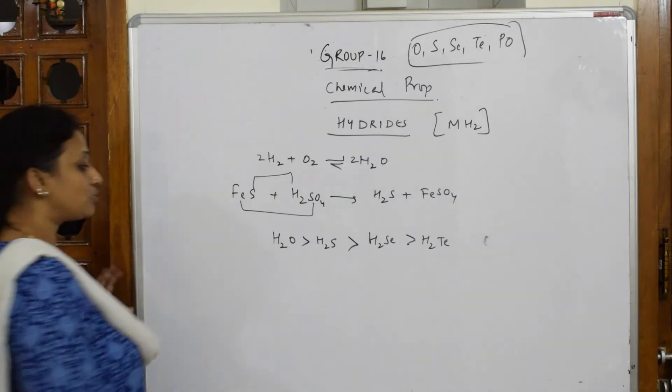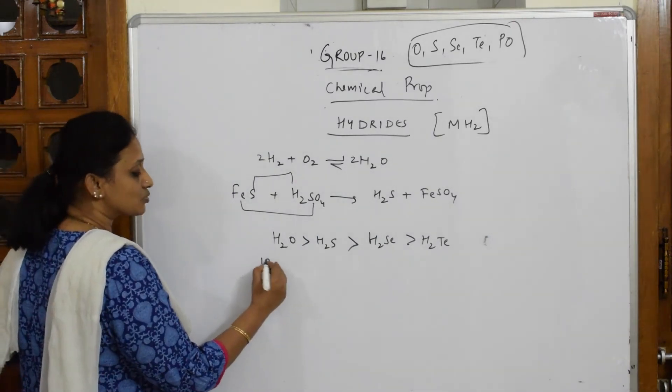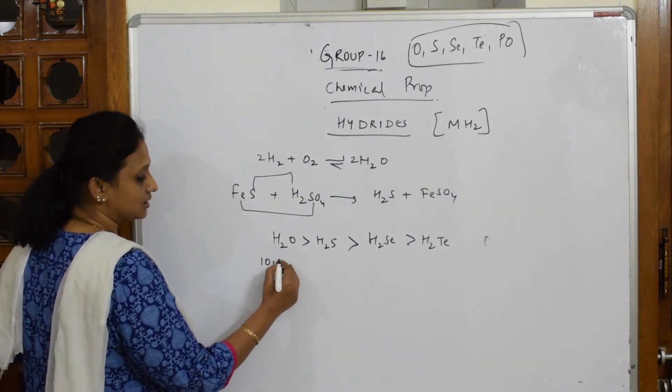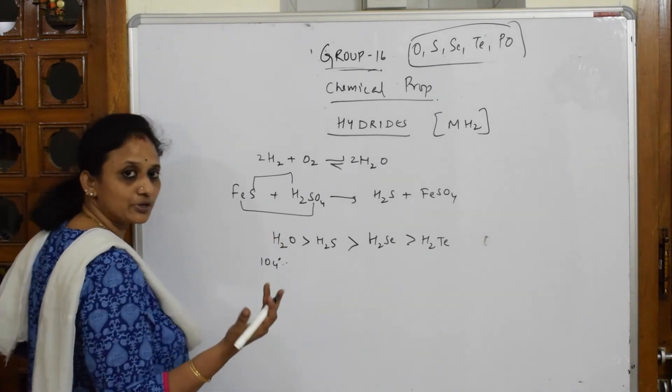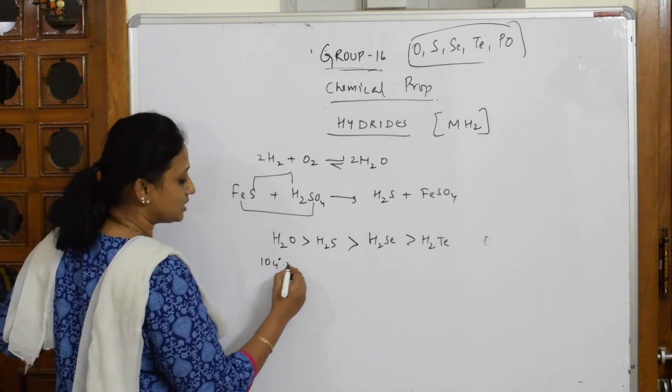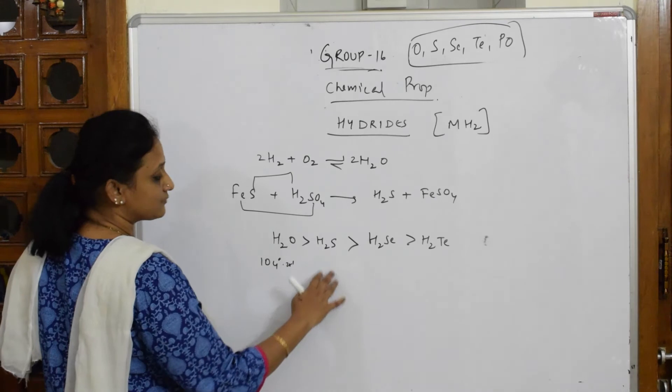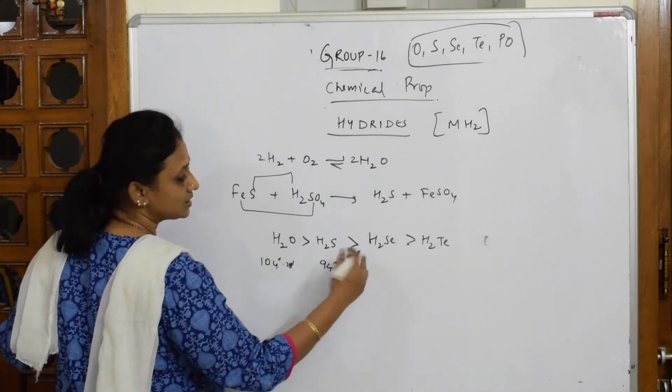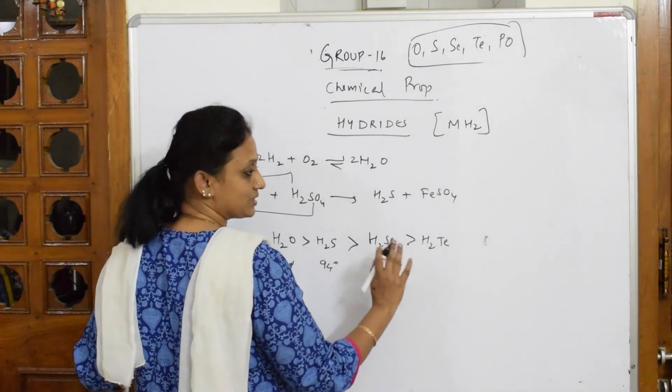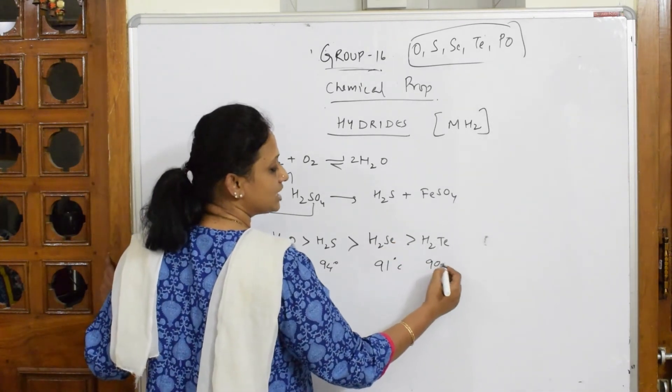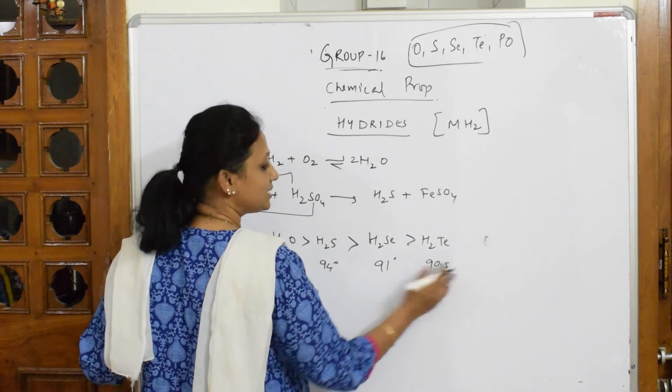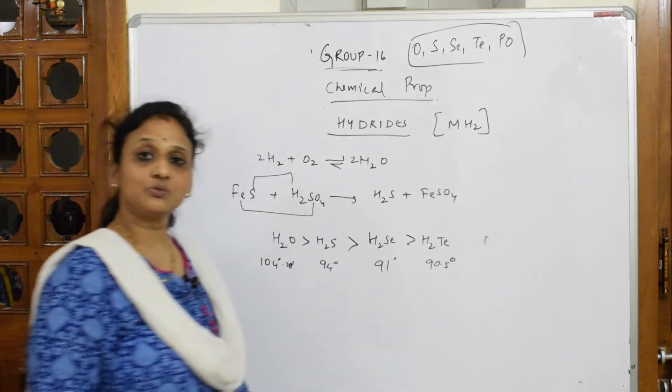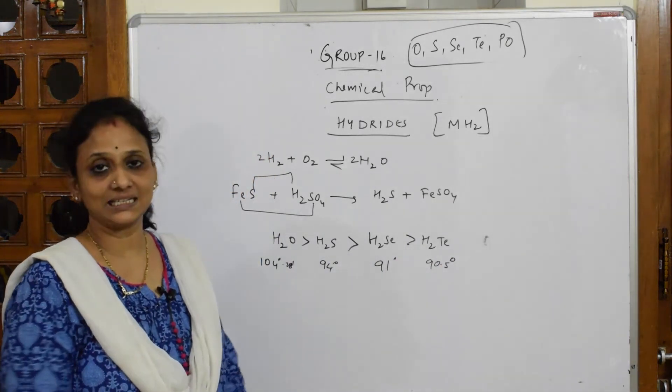When I have to see the bond angles of this, this is almost 104 degrees, almost 104 degrees 28 minutes. Coming down to sulfur, it is almost 94 degrees. Here again, it is almost 91 degrees. Approximately getting tellurium, it is almost 90.5 degrees, not centigrade, it is degrees. So, as we go down, the bond angle decreases.